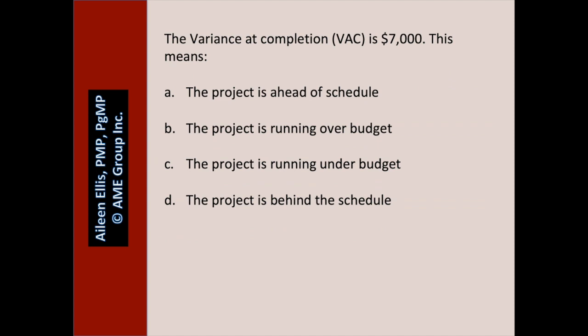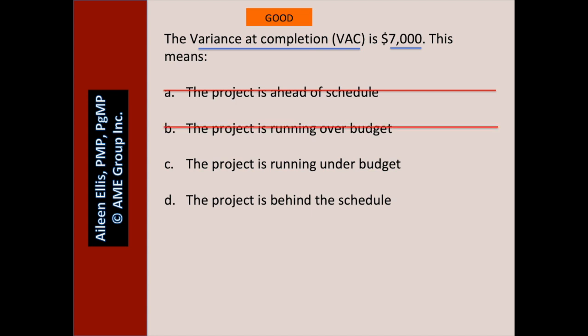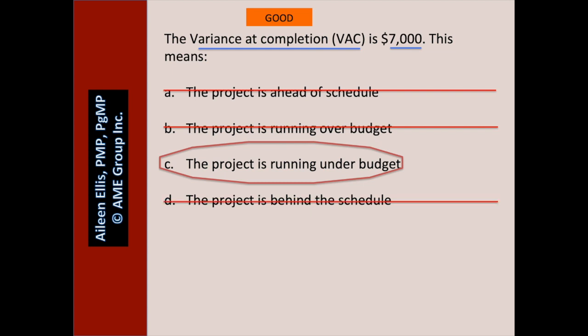The variance at completion is $7,000. This means — pause the video and answer the question. If the variance is a positive number, is this good or bad? It's a good thing — it means we expect to underrun. A: the project is ahead of schedule — we have no idea. B: the project is running over budget — no, that's false. C: the project is running under budget — yes, and that's why we expect to have a positive variance. D: the project is behind schedule — we have no idea.